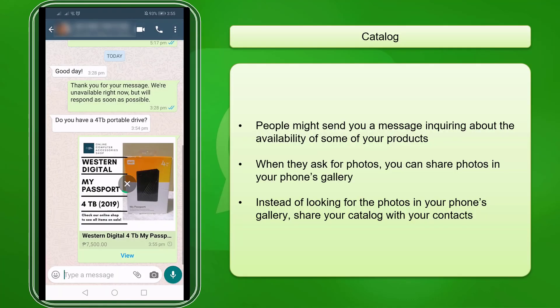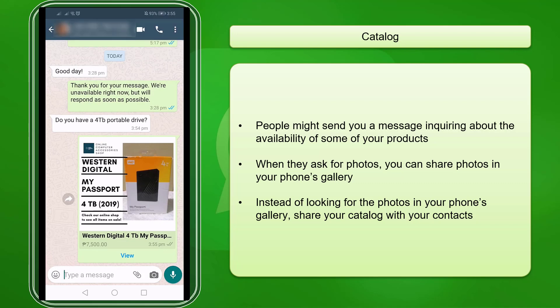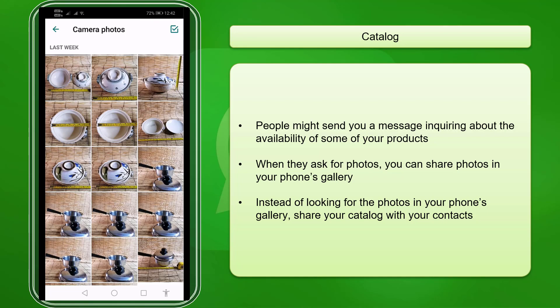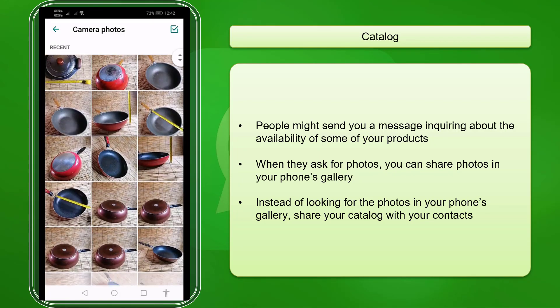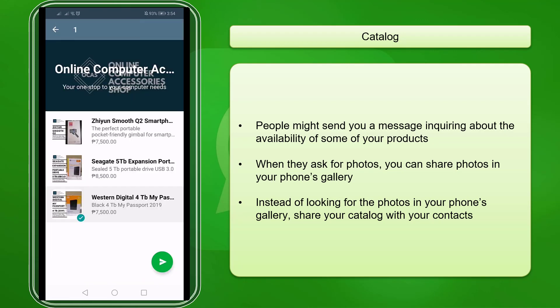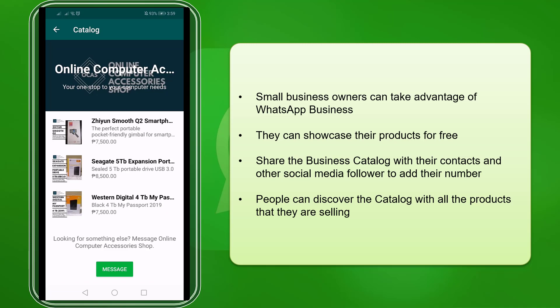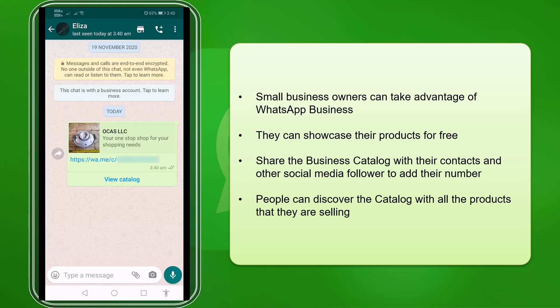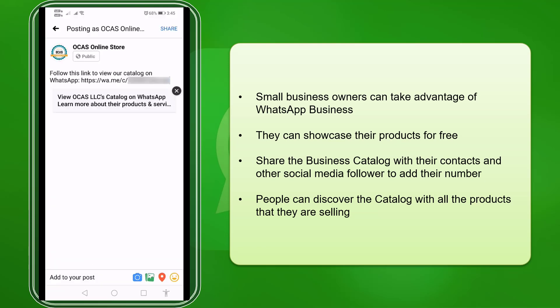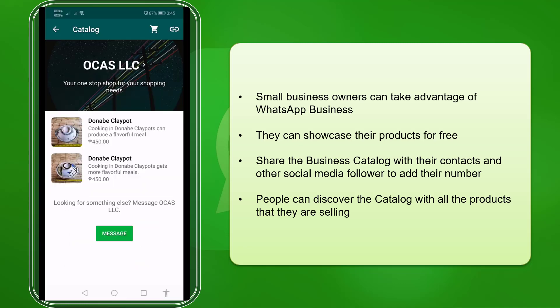When you have a WhatsApp business account, people can send you a message inquiring about the availability of your products. Instead of searching for product photos saved on your phone's gallery, you can use the catalog and choose the products your potential customers are looking for. WhatsApp Business is a great additional platform for small business owners with limited resources to set up an ecommerce website. You can also share the link to your product catalog on your social media accounts, helping your catalog be discovered by your followers, who can then add your WhatsApp number to their contacts.